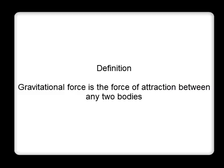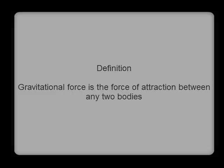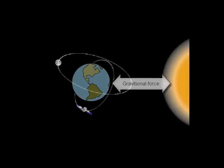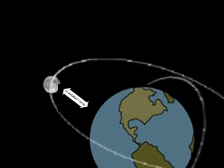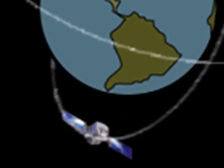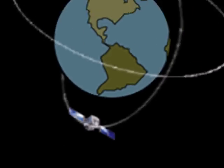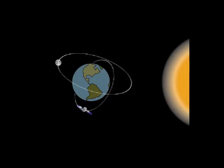Gravitational force is the force of attraction between any two bodies. Every motion in the universe is governed by gravitational force. For example, motion of the earth is governed by gravitational force between the earth and the sun. Motion of the moon is governed by gravitational force between the earth and the moon. Motion of all artificial satellites revolving round the earth is governed by gravitational force of the earth on the satellites. Thus, every motion is governed by gravitational force.